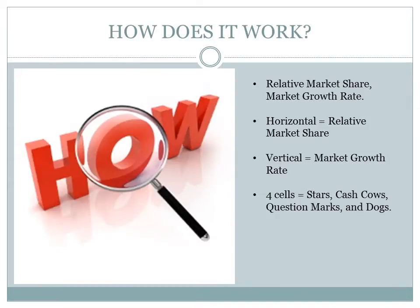How does it work? The analysis requires that the relative market share and market growth rate are both calculated for each strategic business unit. The dimension of business strength and relative market share measures comparative advantage indicated by market dominance. The key theory underlying this is the existence of an experience curve, and that market share is achieved due to overall cost leadership. The BCG matrix has four cells, with the horizontal axis representing relative market share and the vertical axis representing the market growth rate. The midpoint of relative market share is set to 1.0. If all strategic business units are in the same industry, the average growth rate of the industry is used. If all the strategic business units are located in different industries, then the midpoint is set at the growth rate for the economy.